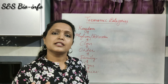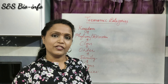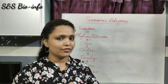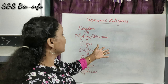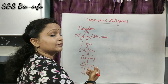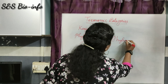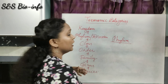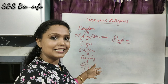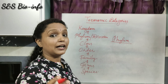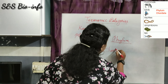The second largest taxonomy category is Phylum — or Division for plants. Phylum is a group of closely related classes. For example, the phylum Chordata comprises related classes.